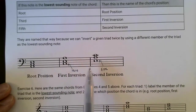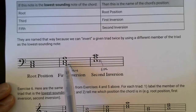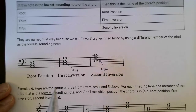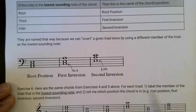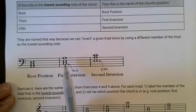By the way, it doesn't matter if a note is an octave lower or what have you. It doesn't matter what the distance is between the lowest sounding note and any other notes. As long as the lowest sounding note is, for example, the third, it will always be first inversion. We're always just looking at what is the lowest sounding note. For example, in an orchestra, if a tuba is playing the C, the resulting chord will always be a first inversion in that case.